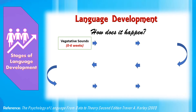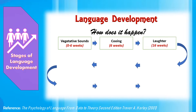Children are not born silent. Of course, they make what are known as vegetative sounds — from the beginning they cry, burp, and make sucking noises. Around 6 weeks of age they start cooing, and from about 16 weeks old they start to laugh. Between 16 weeks and 6 months, they engage in vocal play, which involves making speech-like sounds. Vowels emerge before consonants.